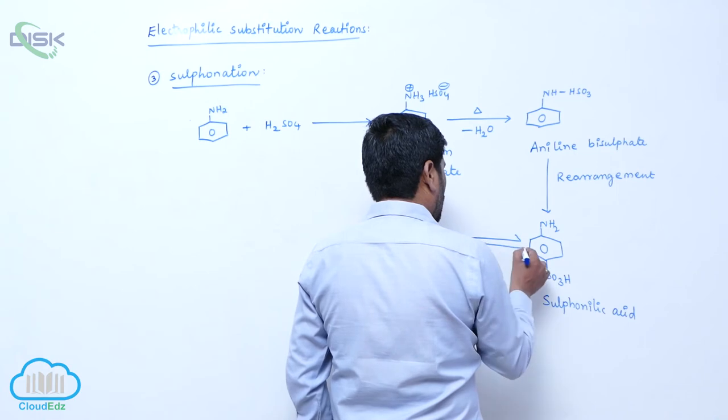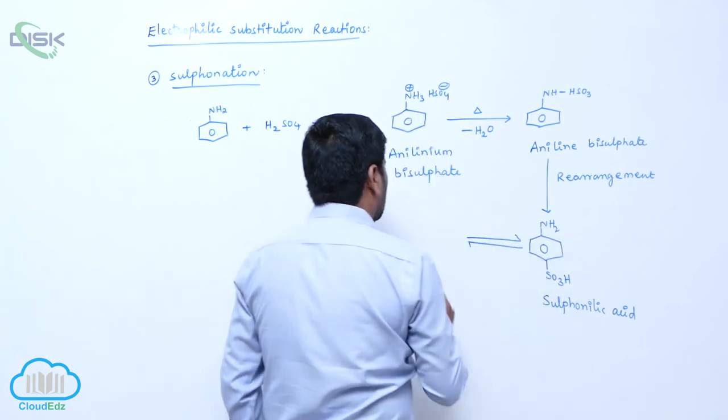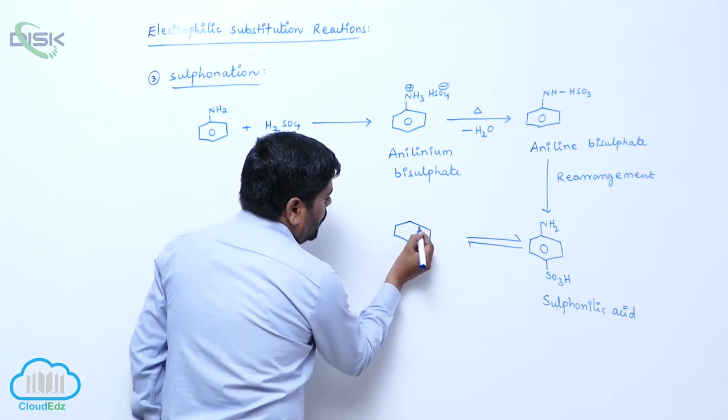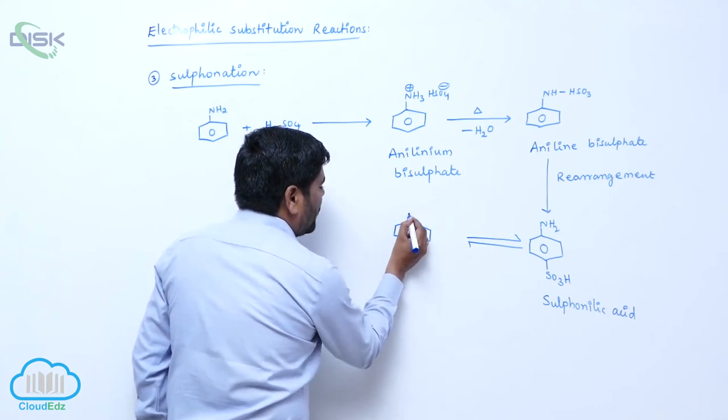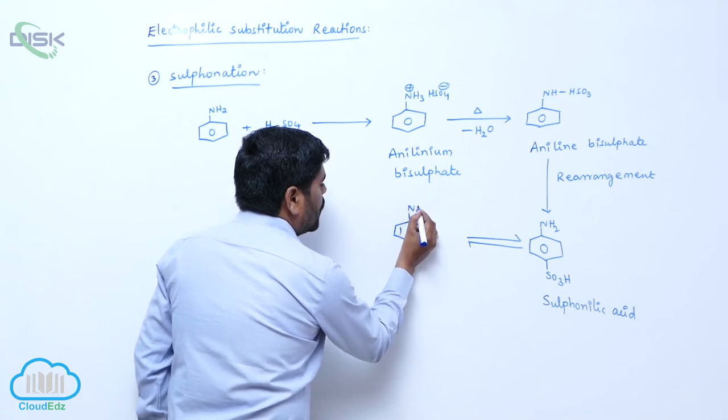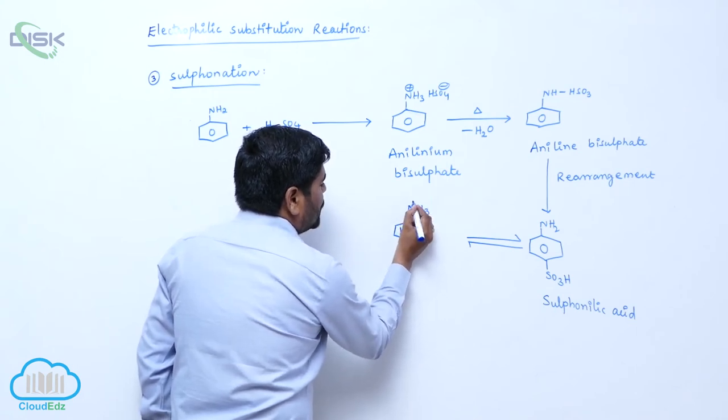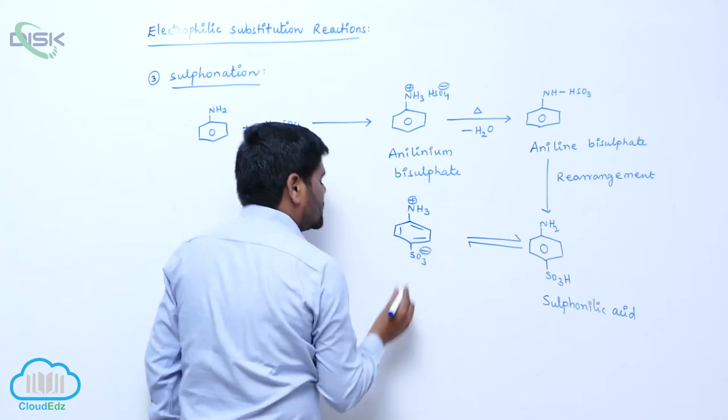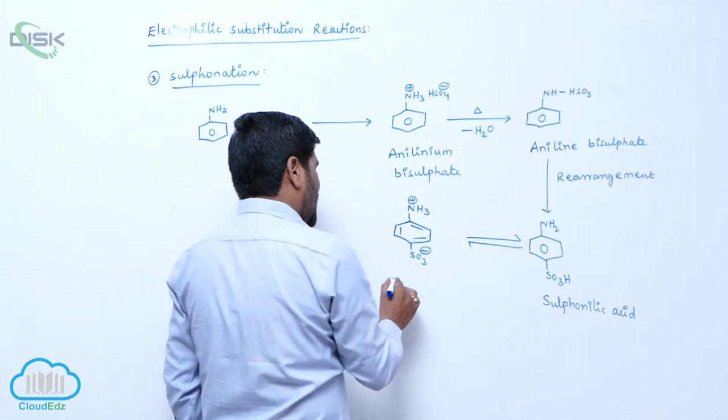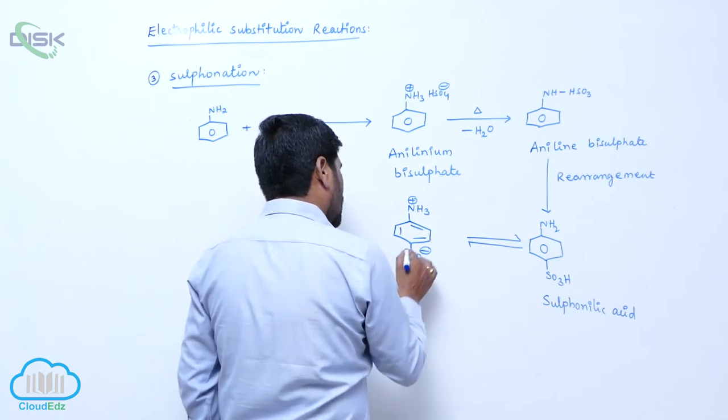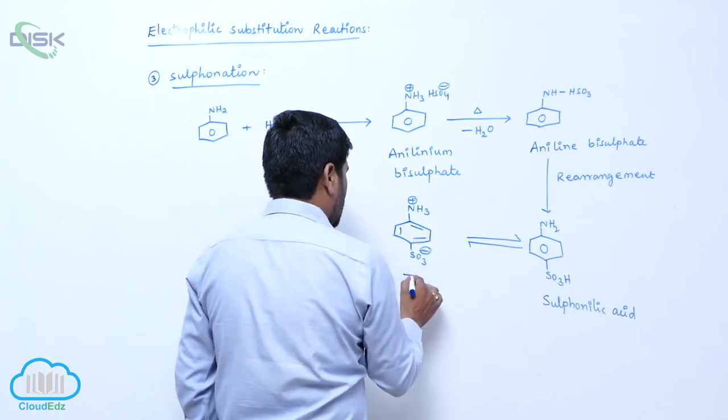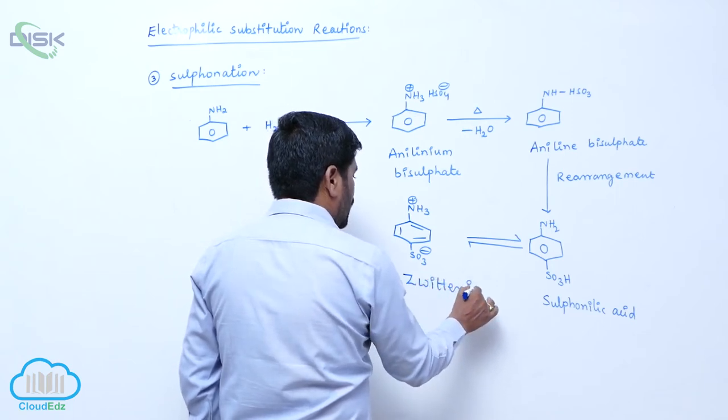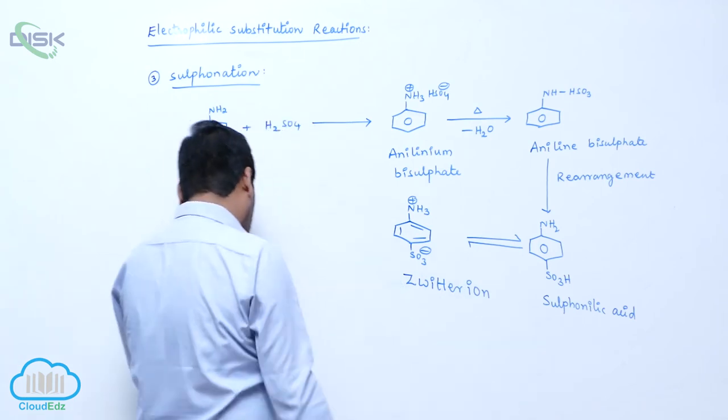Due to it is a base and acid, therefore internal neutralization takes place to form NH3 plus SO3 minus. The same molecule contains both the charges due to internal neutralization known as zwitterion. Known as which one? Zwitterion.